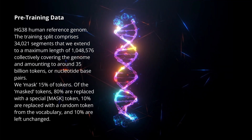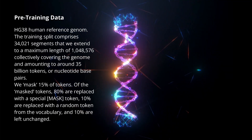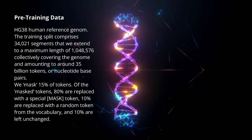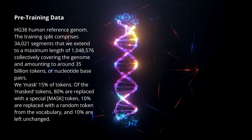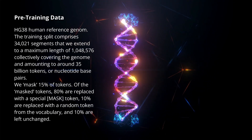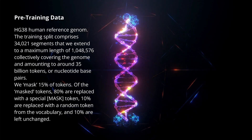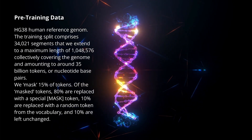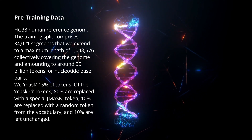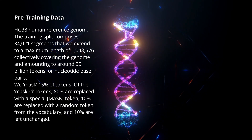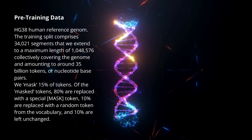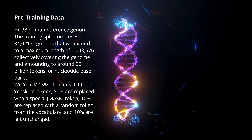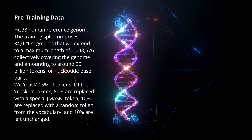Since this is an LLM, the workflow is familiar: we have pre-training, fine-tuning, and alignment. Pre-training data was simply the HG38 human reference genome. The training split comprised 34,000 segments extending to a context length of one million, covering the genome and amounting to around 35 billion tokens — or in our case, nucleotide base pairs.